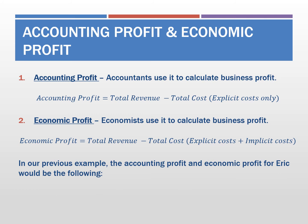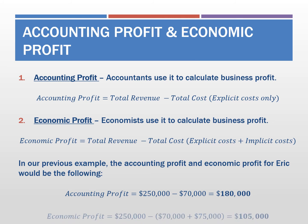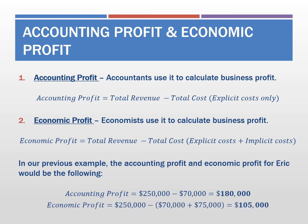Putting those two together, when Eric calculates his accounting profit, he might think he is getting $180,000 in profits that year from running the tapioca milk tea store. However, if we want to know how well Eric is actually doing compared to the previous year as an accountant, the economic profit calculation shows us $105,000 — because he actually gave up his job income of $75,000.